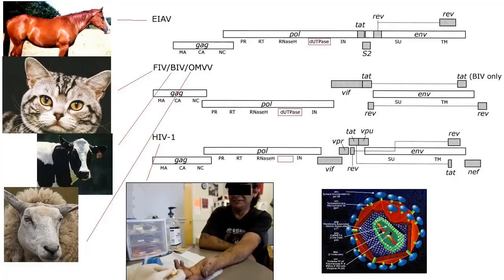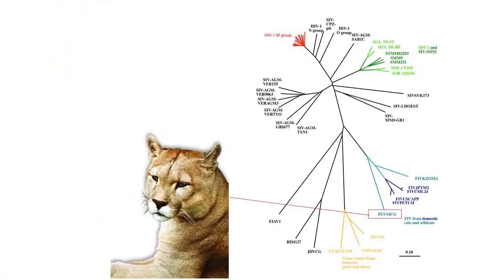There are lentiviruses that infect cats, goats, horses, sheep, cows, and monkeys. There's even a puma lentivirus. Not all of them cause disease under certain conditions.